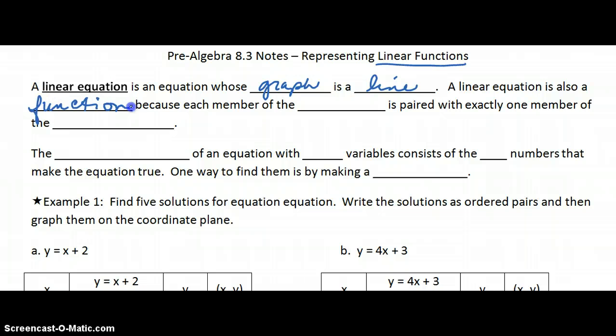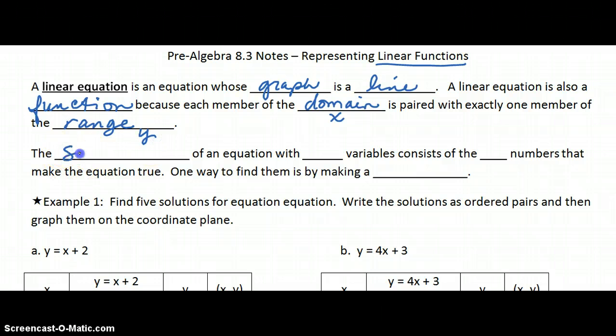This is because each member of the domain – remember, domain is x, the number you're putting in – is paired with exactly one member of the range, and the range is the y, what's getting spit out. The solution of an equation with two variables will consist of two numbers that make the equation true. One way to find these numbers is by making a table.